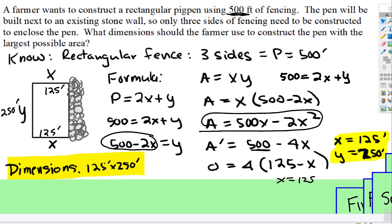So that means the final dimensions, because remember, what are the dimensions should the farmer use? 125 feet by 250 feet will be the dimensions of this pen. All right, that's it for this one.